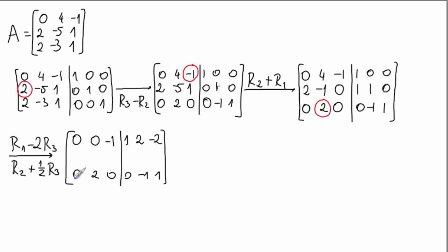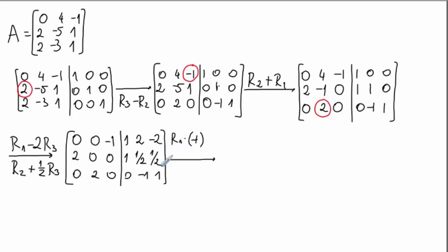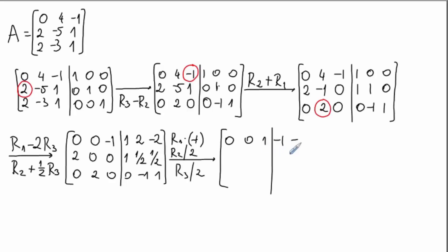For R2 plus one-half R3: 2 plus 0 gives 2; negative 1 plus 1 gives 0; 0 is unchanged; then 1 minus one-half and 0 plus one-half. Now we have 3 pivots in 3 pivot columns across 3 rows — the elimination process is complete. What remains is cosmetic work: multiply the first row by negative 1, divide the second row by 2, and divide the third row by 2 to convert all pivots to 1.